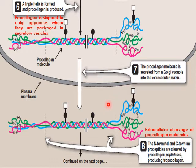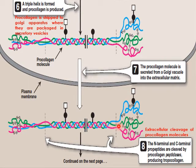In the extracellular matrix, the C-terminus and N-terminus of pro-collagen are removed — a process called extracellular cleavage of pro-collagen molecules. This cleavage is carried out by pro-collagen peptidases, and the resulting structure — the central region between the two termini — is called tropocollagen.